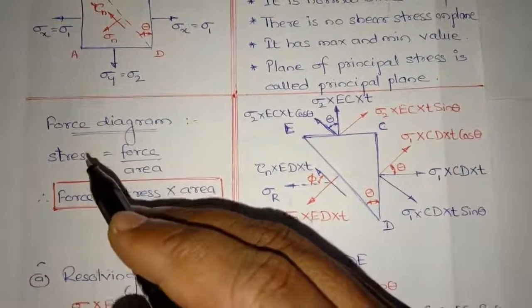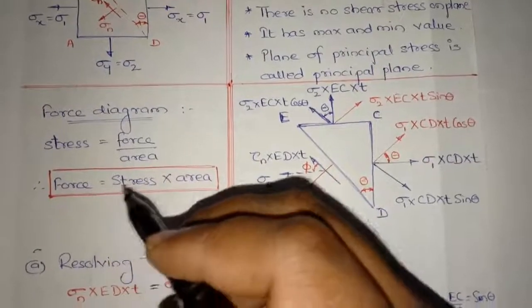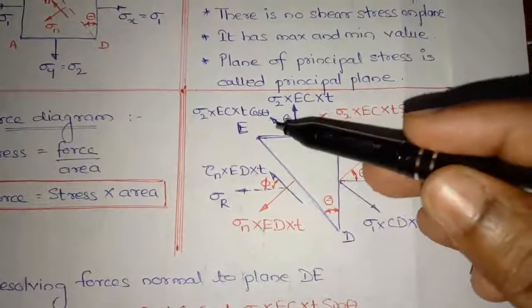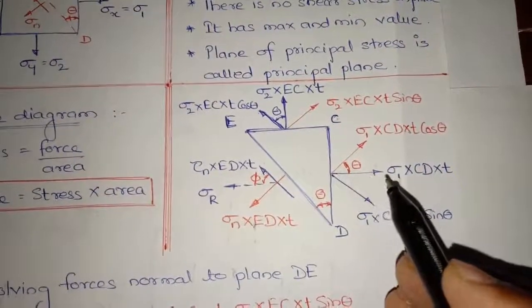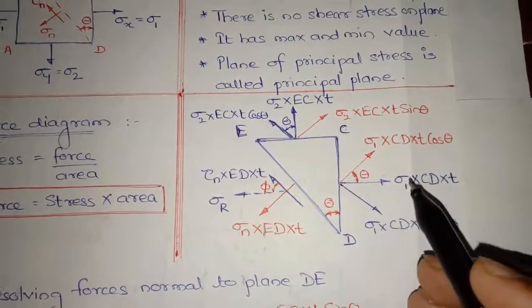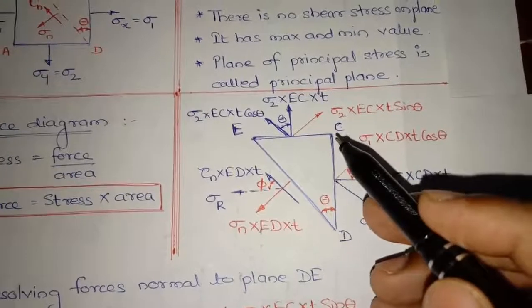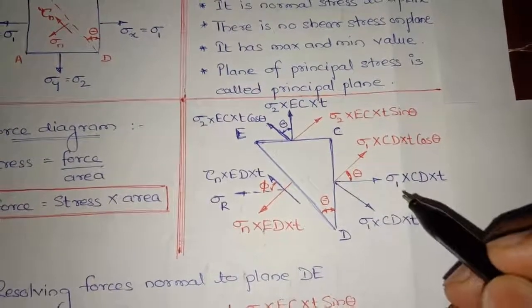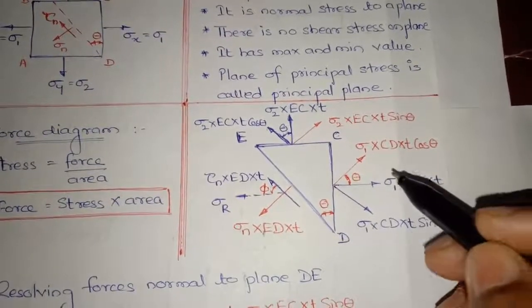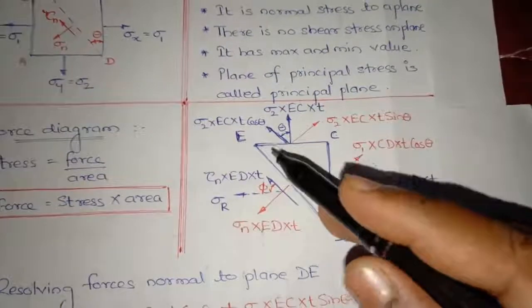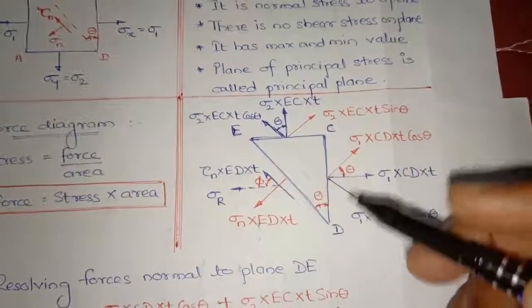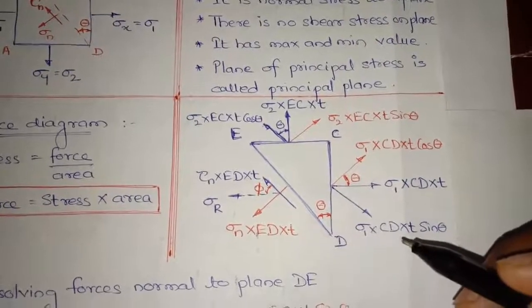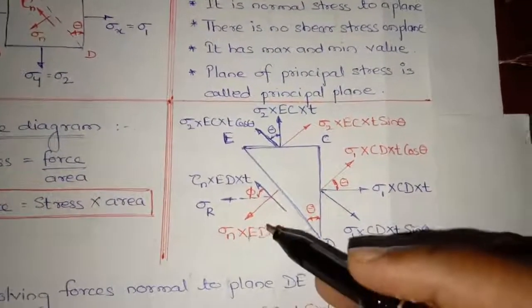As we know, the formula stress is equal to force by area, so force is equal to stress times area. Here I have redrawn the segment CDE of the element. The force is sigma 1 times CD times t, where CD times t is the area and t is the z dimension. Resolving this force into a perpendicular component and a parallel component to the plane ED, we get sigma 1 CD t cos theta and sigma 1 CD t sin theta. In red ink we can see all the perpendicular forces to plane ED, and in blue ink the parallel forces.